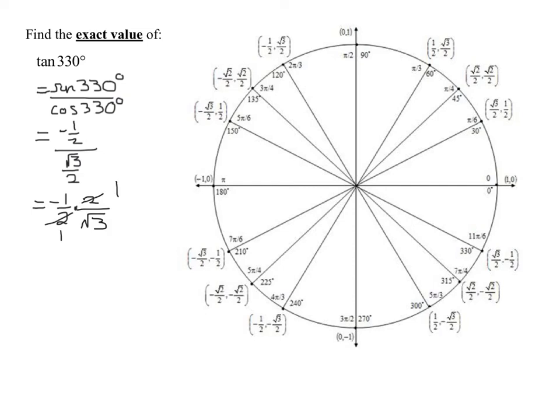The 2's reduce and so I get negative 1 over the square root of 3. So that is equal to the tangent of 330 degrees.